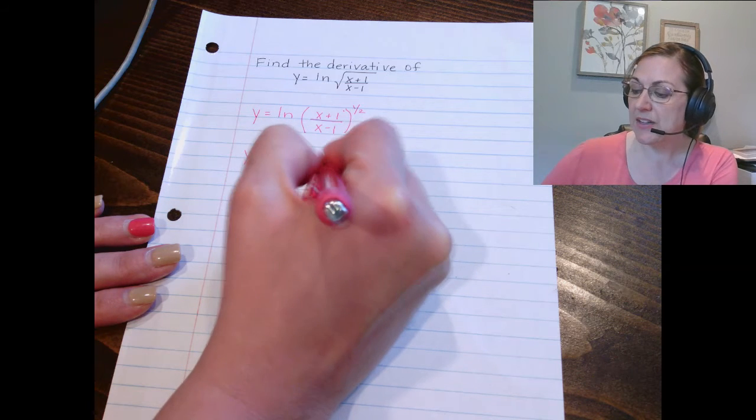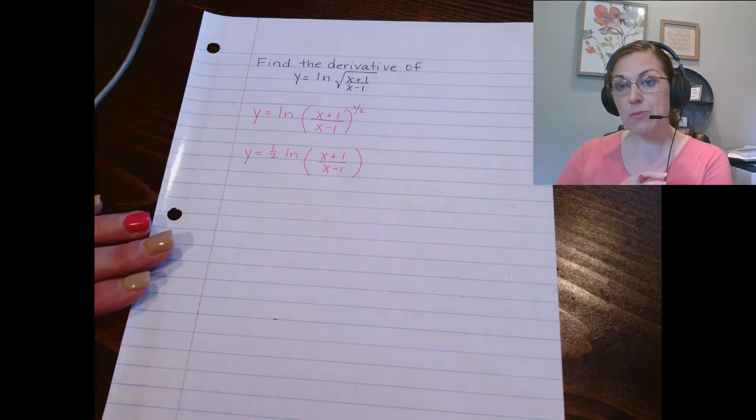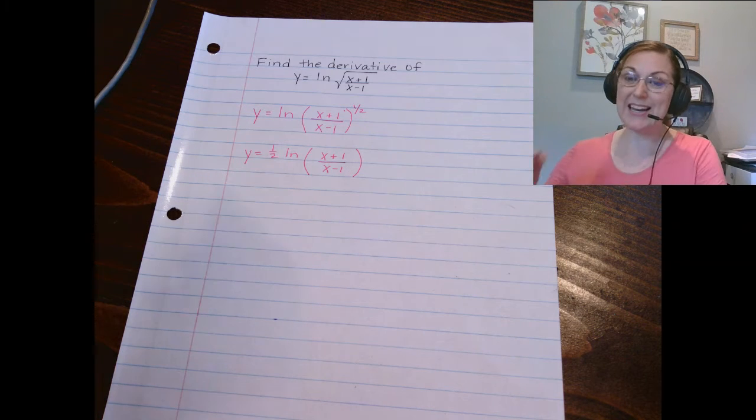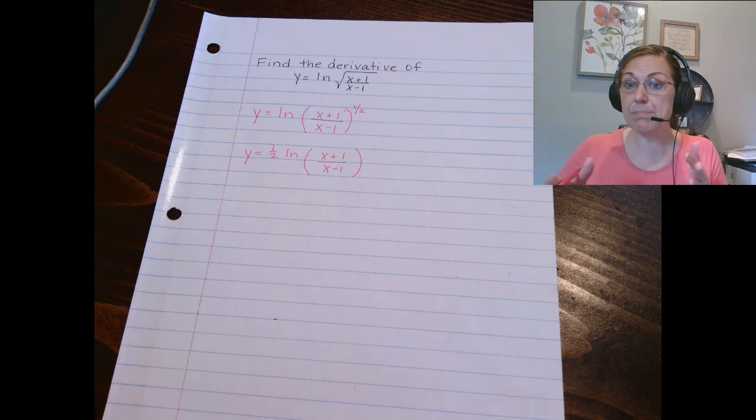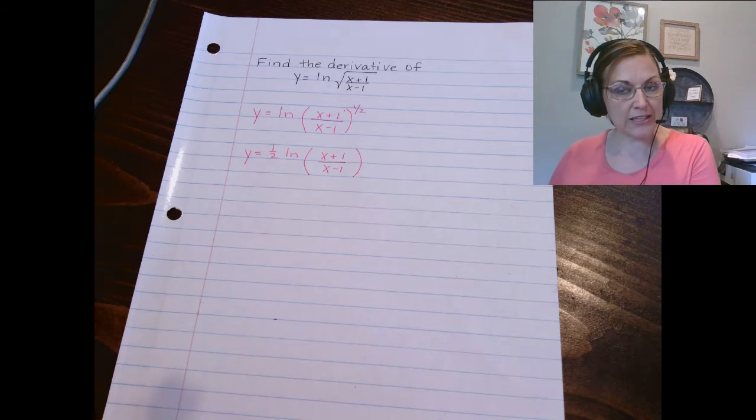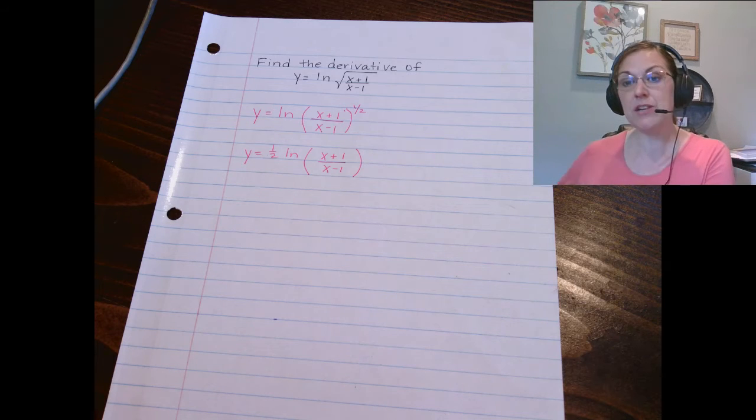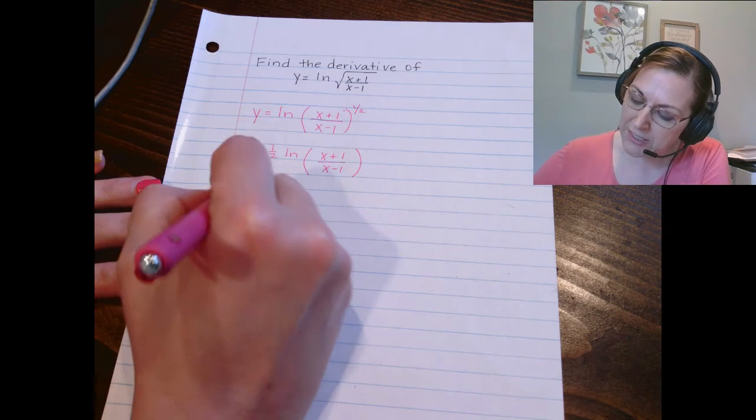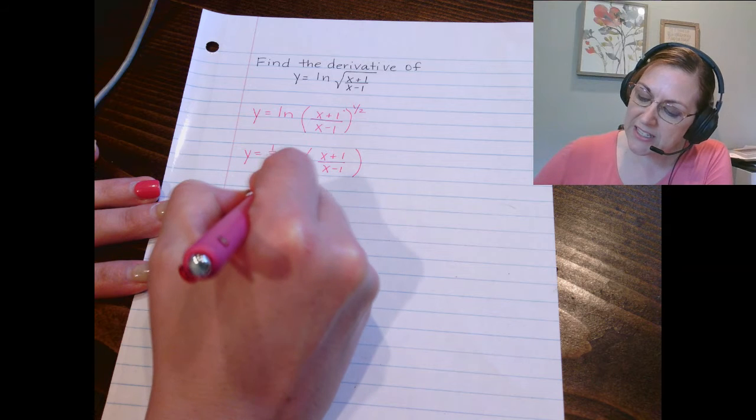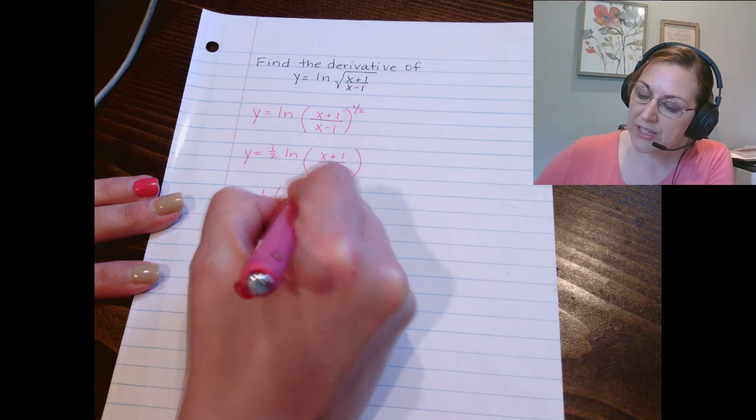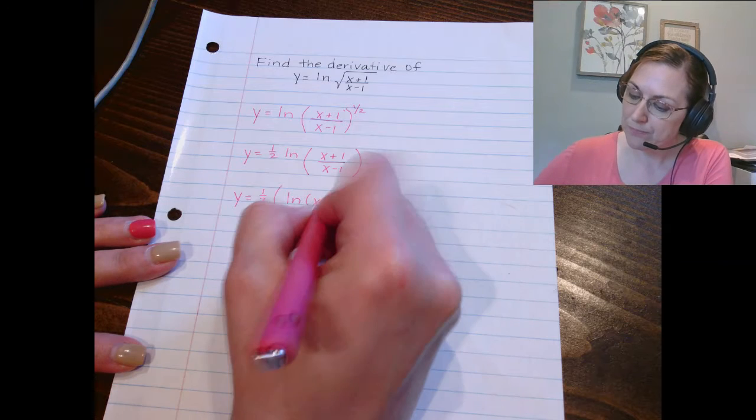Then we see that inside of the logarithm, we have a division. So I'm going to rewrite that as a subtraction. And again, what we're doing is we're simplifying so that when we have to do the calculus part, when we have to take the derivative, we're making it as simple as possible. And so by splitting these up, we're actually avoiding the quotient rule.